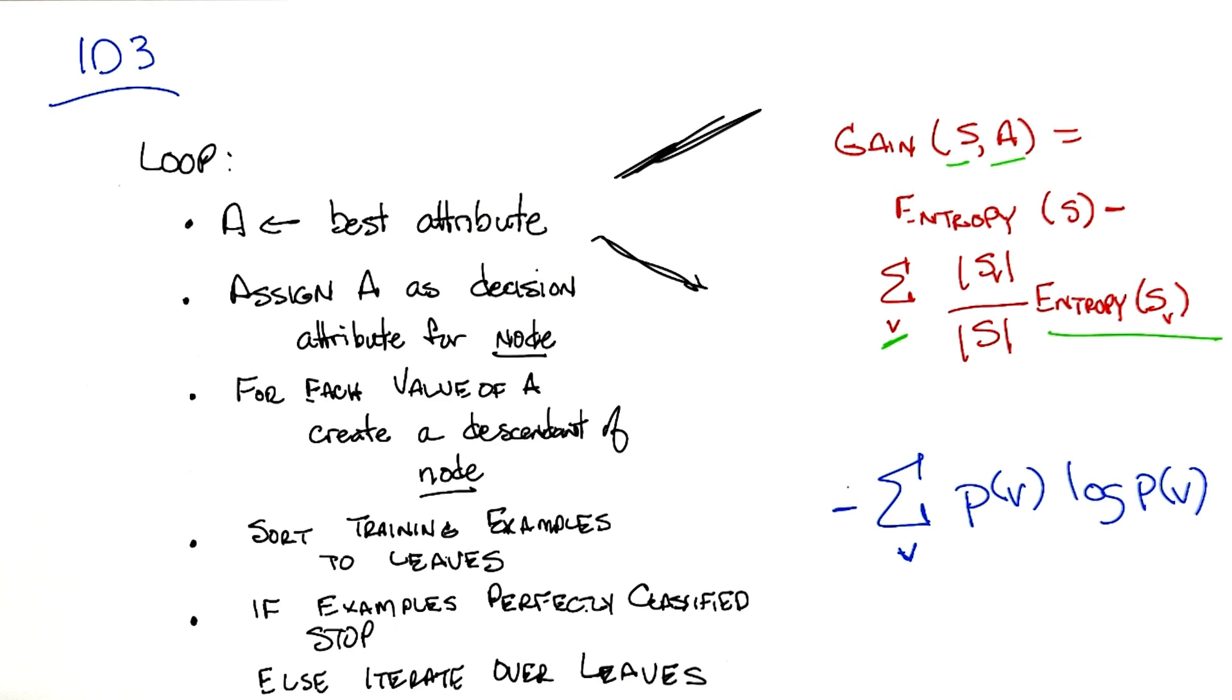We're going to go into a lot more details about this later when we get further on in the class with randomized optimization where entropy is going to matter a lot. But for now, I want you to have the intuition that this is a measure of information.